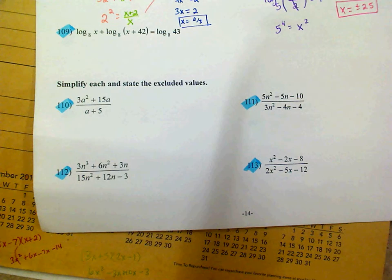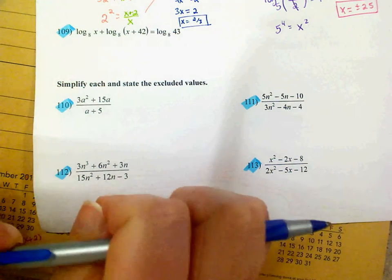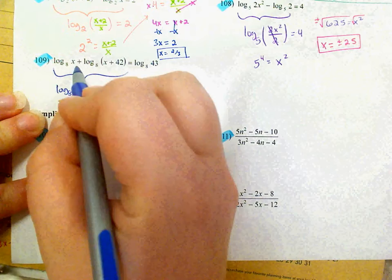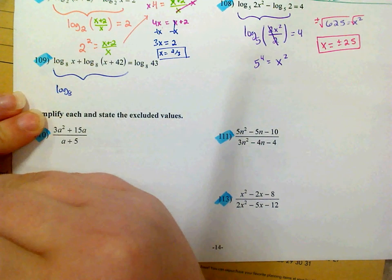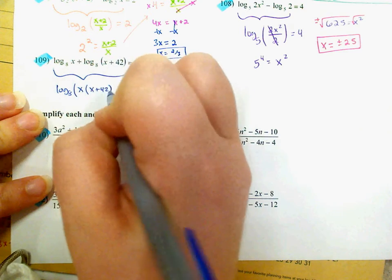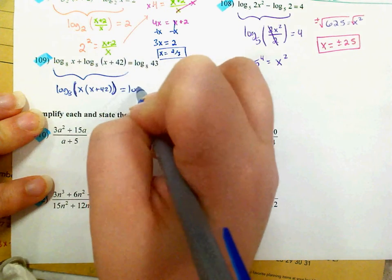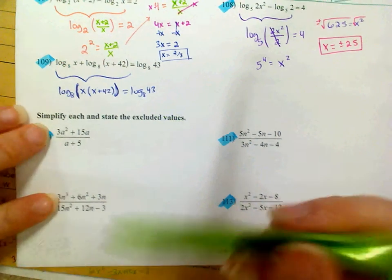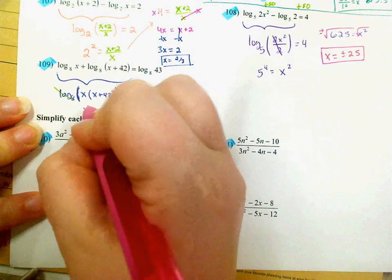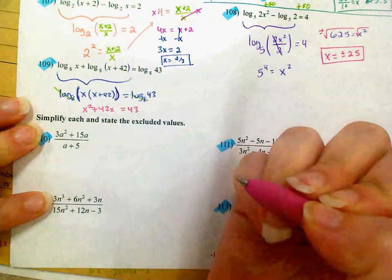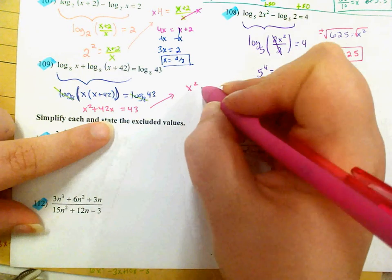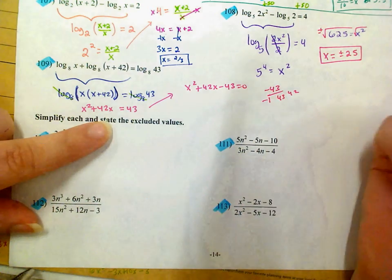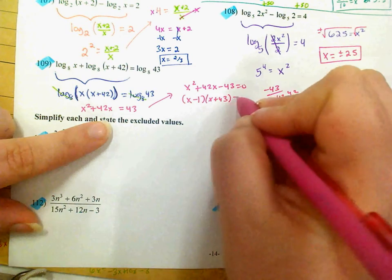On 109, the last one — if I've got two logs separated by addition, I'm going to combine them using multiplication. So log base 8 of x times x plus 42 equals log base 8 of 43. Now I'm back to having a log equal to another log, so I can cancel the logs out and I'm dealing with x squared plus 42x equals 43. Rewriting in standard form: x squared plus 42x minus 43 equals 0. The factors of negative 43 that add up to 42 are negative 1 and 43, so x minus 1 and x plus 43, meaning the answers are 1 and negative 43.